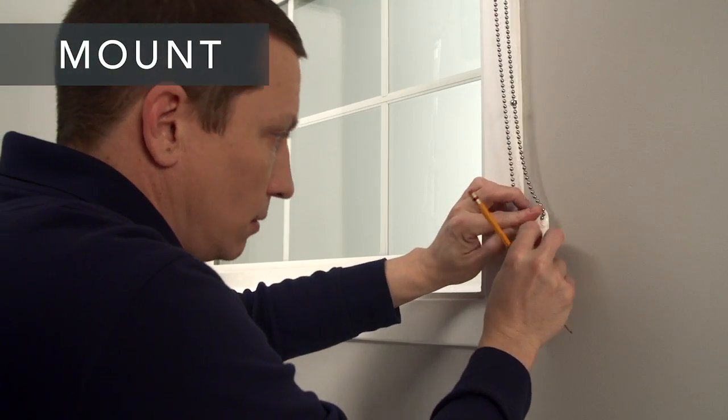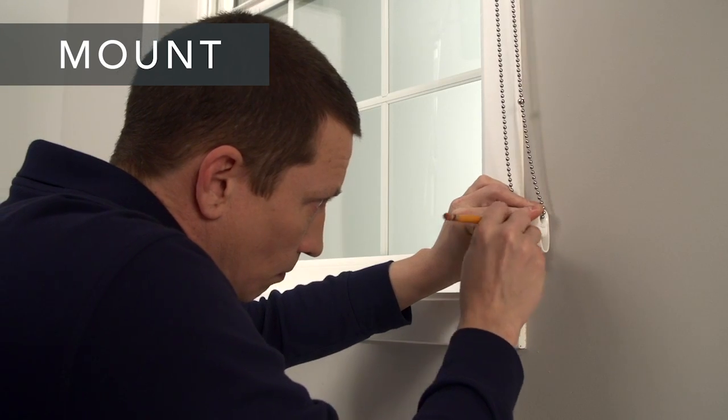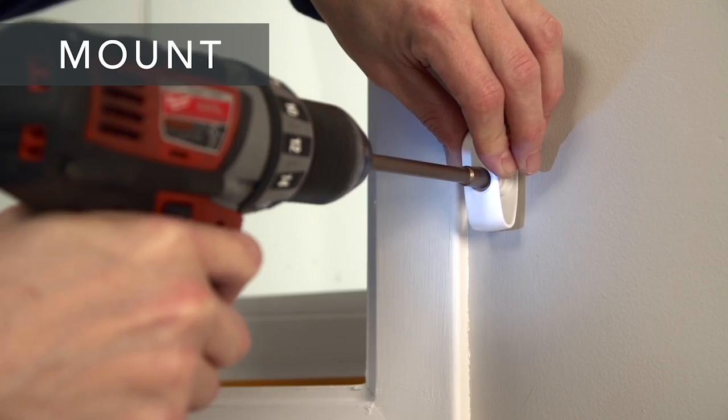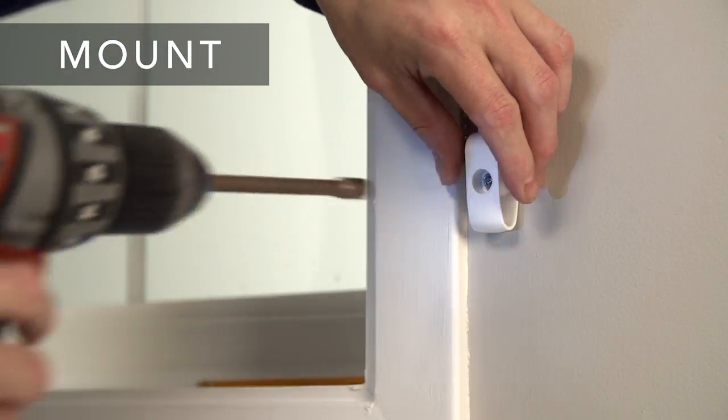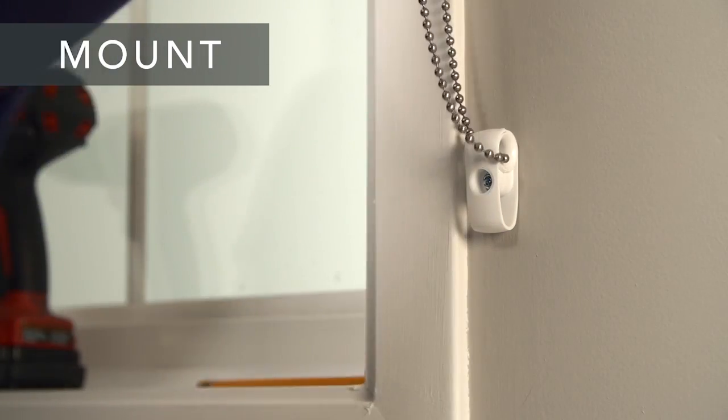When you mount the hold-down device on the wall, leave some slack in the chain, then mount it securely. This will create a safer environment for kids and pets if used correctly and consistently.